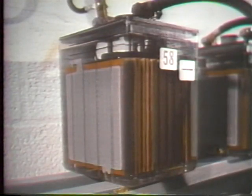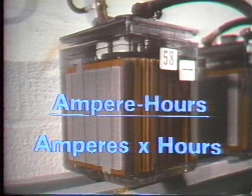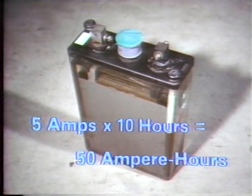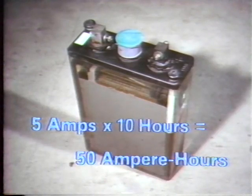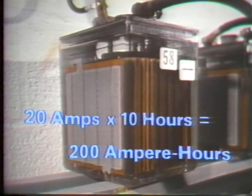The larger the plate area, the greater the ampere-hour capacity of the cell. The ampere-hour capacity rating of a cell is simply a discharge rate in amperes multiplied by the number of hours that the cell can deliver that current. For example, the smaller cell can deliver 5 amps for 10 hours, giving it a capacity rating of 50 ampere-hours. The larger cell can supply 20 amps over the same 10-hour period, so its capacity is 200 ampere-hours.